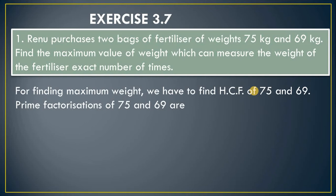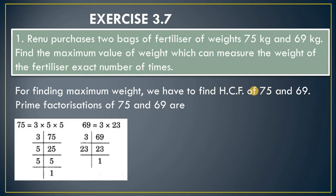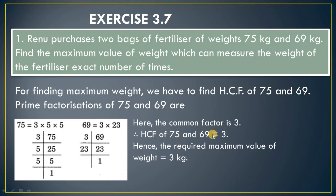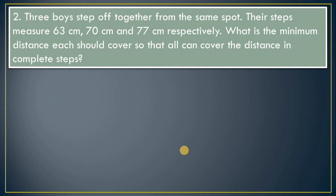Using prime factorization of 75 and 69 — you can use a tree diagram, factorization method, or division method. Taking the common factor: 3 is common. Dividing: 75 ÷ 3 = 25, then 25 ÷ 5 = 5, then 5 ÷ 5 = 1. Continue until you get 1. The common factor is 3, so HCF = 3. Hence the required maximum weight is 3 kg.